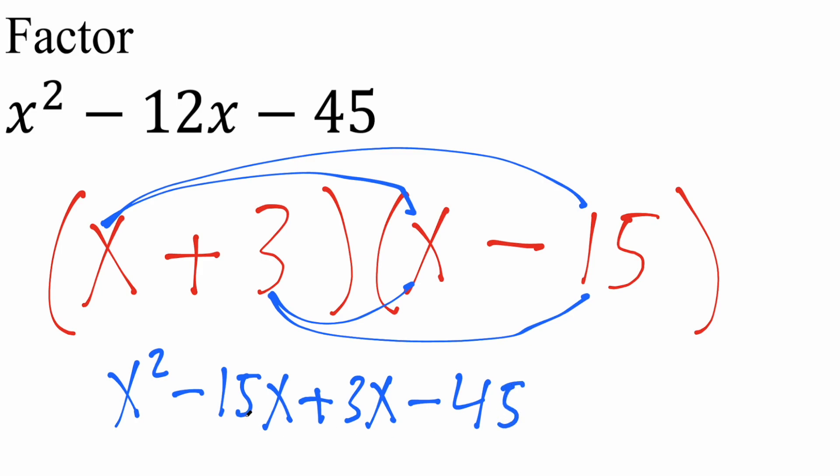From here we can check negative 15 plus 3 is, in fact, negative 12. You have a negative 45, you have a negative 45, you have an x squared, you have an x squared. So it's a match. And that's pretty much it for this video.